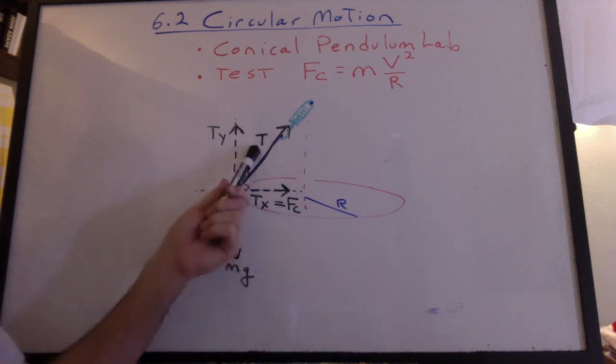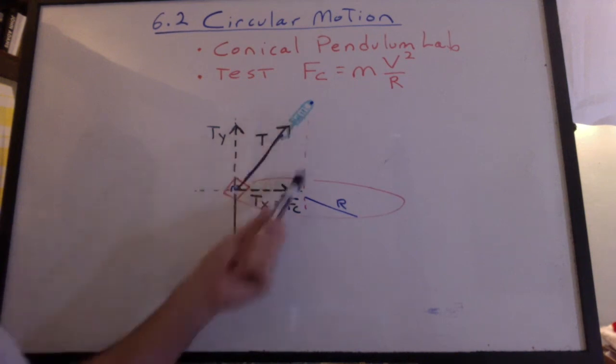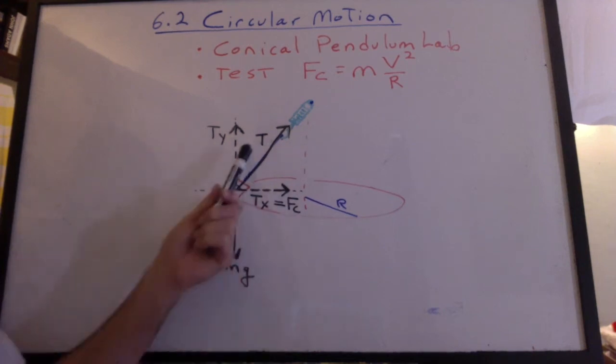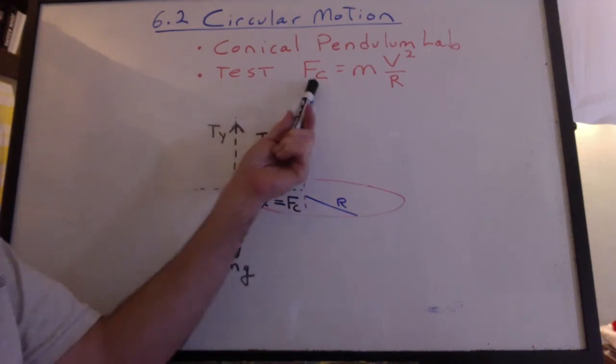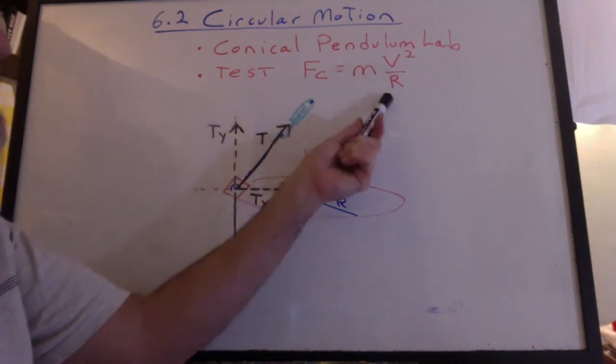And then we know that's equal to the x component of the tension in the string. Well that can tell us what this is mathematically if we know the angle in here. Then if we know what this is, we can compare it to what the spring scale reads. So remember the goal. It's to test Fc equals m v squared over r.